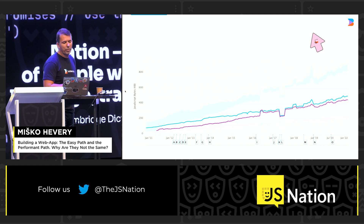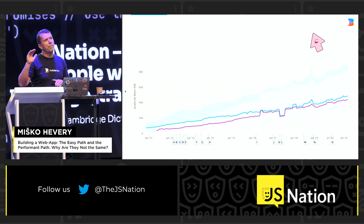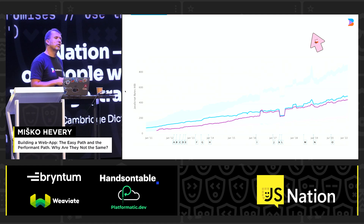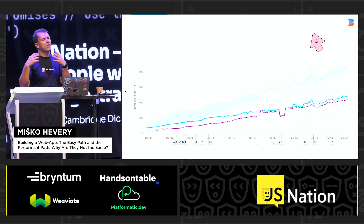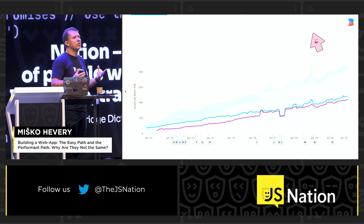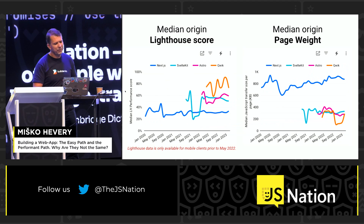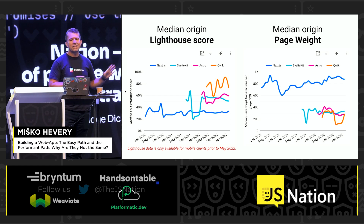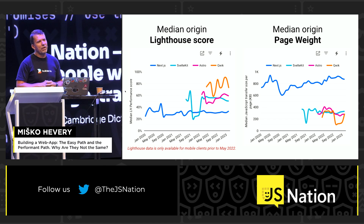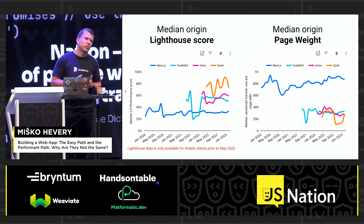This is a chart from HTTP Archive showing the amount of JavaScript we've been sending to browsers over time — and as you can see, that's just going up, up, up. Our users expect complicated, rich applications, and you cannot deliver complex applications without JavaScript. Here's another interesting graph from HTTP Archive: the median score a website gets and the amount of JavaScript being shipped are essentially inverse of each other. The more JavaScript you ship, the lower your Lighthouse score, and the less JavaScript you ship, the better your Lighthouse score.